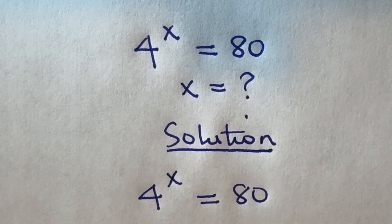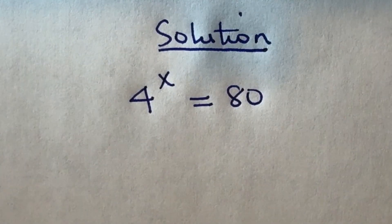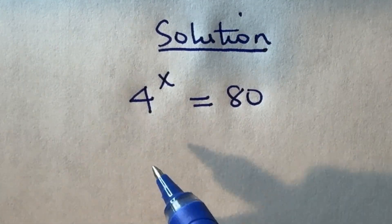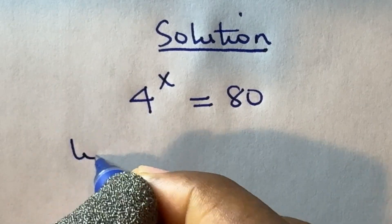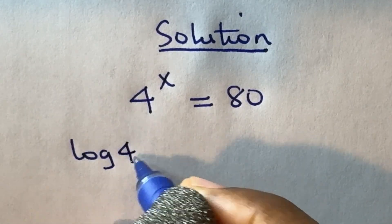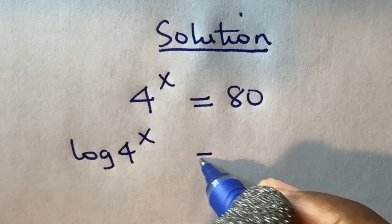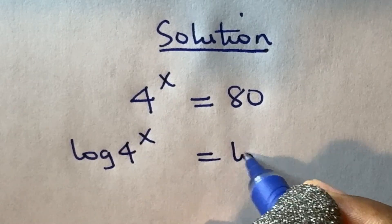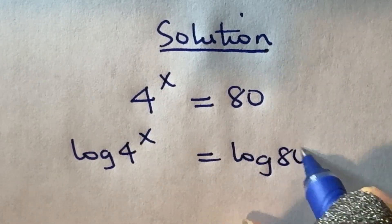I'm going to begin by taking the logarithm of both sides. So I have log of 4 raised to power x is equal to log 80.